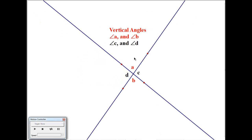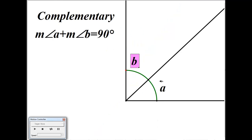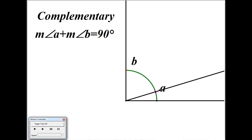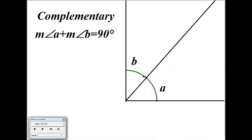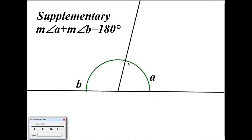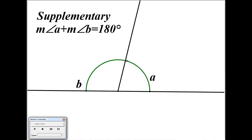Vertical angles: if two lines intersect each other, they form four angles. Angles A and B that are opposite from each other are vertical angles, as are C and D. If two angles add up to 90 degrees, they are called complementary angles — B is called the complement of A. If two angles A and B add up to 180 degrees, they are called supplementary angles.